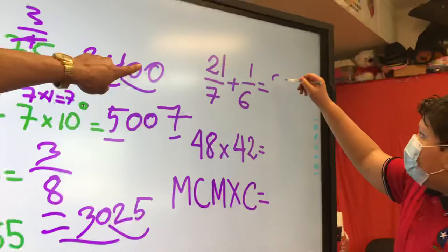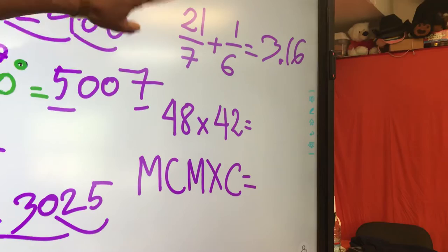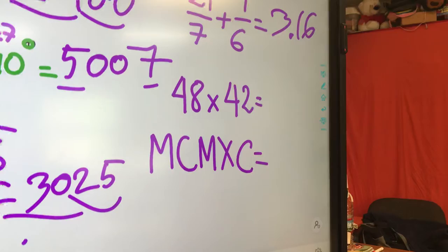What about the fraction? 3.16. Why is 3.16? Because 21 over 7 equals 3. 3 wholes and 1/6 equals 1.6. Correct. That's the answer.